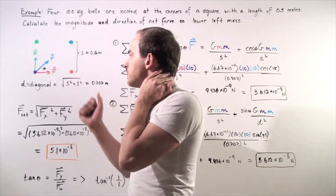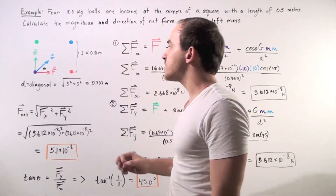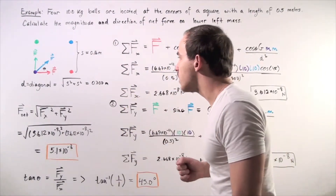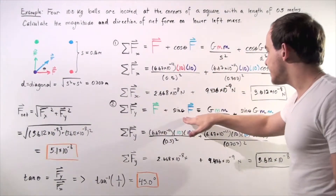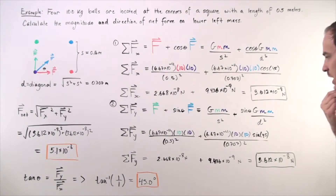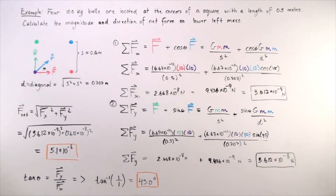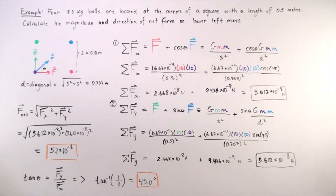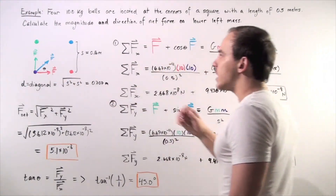For all forces on the purple ball along the y-axis, we again have two forces: the green force from the green ball, and the y-component of the blue force, which is the magnitude of the blue force times sine of the angle theta. We substitute and plug in values the same way as before. Adding the two values gives the same magnitude: 3.612 times 10 to the negative 8 newtons, which makes sense because cosine of 45° and sine of 45° are identical. One component is along the x-axis and the other along the y-axis.